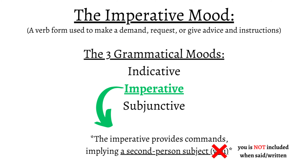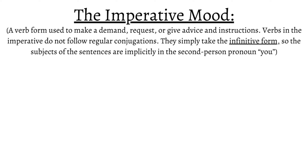Essentially, commands in the imperative express a demand or a suggestion, telling the reader what should be or should not be. Verbs in the imperative do not follow regular conjugations; instead, they take the infinitive form, so the subjects of the sentences are implicitly the second-person pronoun 'you.'